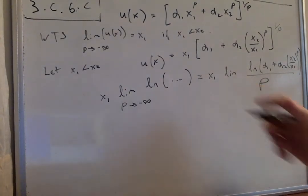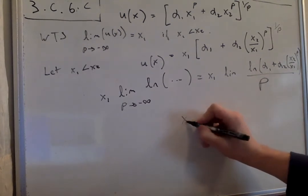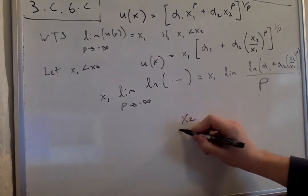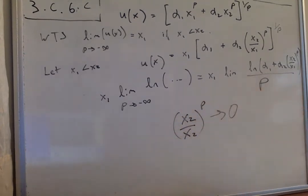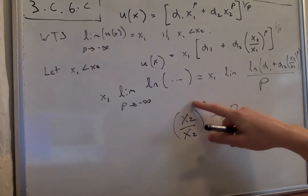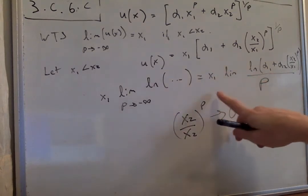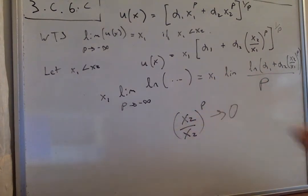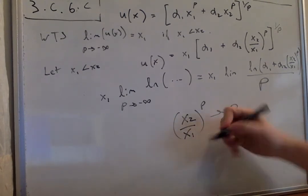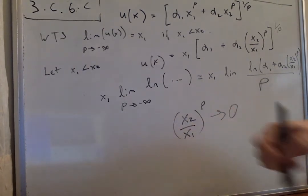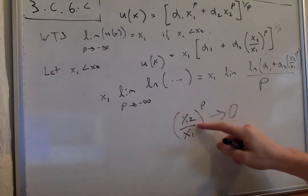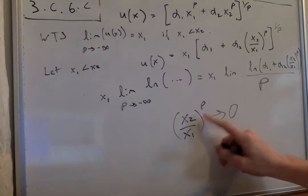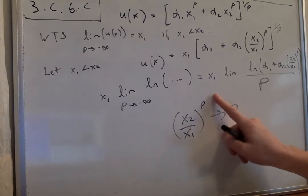Since we know x₁ < x₂, this is going to go to zero as ρ → -∞. You can factor out negative 1, and this goes to infinity. This is x₁, which means we'll have a fraction less than 1. When you flip this by applying the negative, it's a fraction less than 1 being raised to the infinite power.